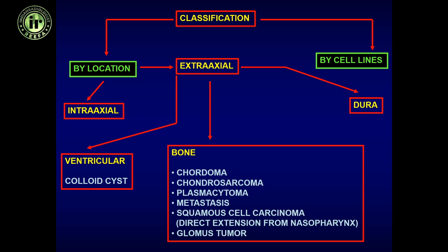For extra-axial locations: ventricular tumors include colloid cysts, neurocysticercosis or other parasitic infections. Dural-based lesions may be meningioma or dural metastasis. From the skull base you would have chordoma, chondrosarcoma, plasmacytoma, and from any other portion of the calvarium you can have metastatic disease.